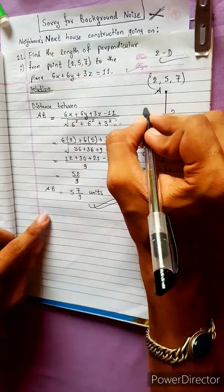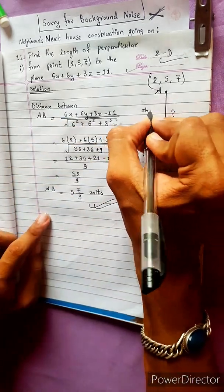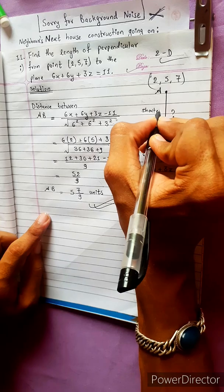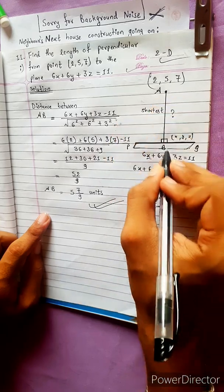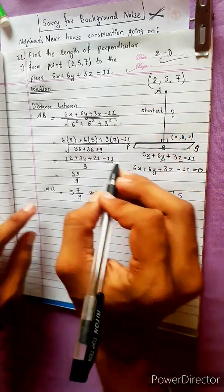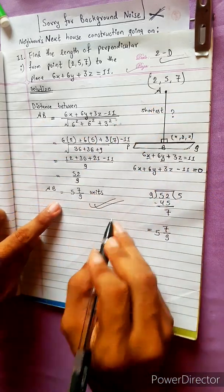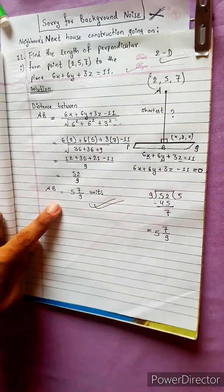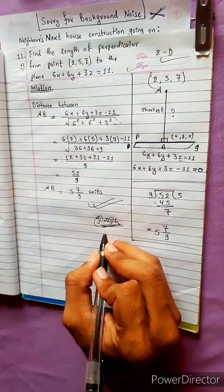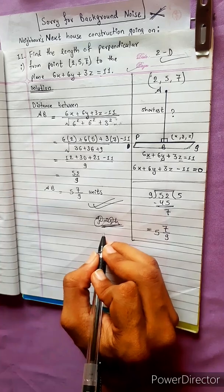This is the shortest distance, also called the perpendicular distance. So you can answer your question. Thank you and bye bye.